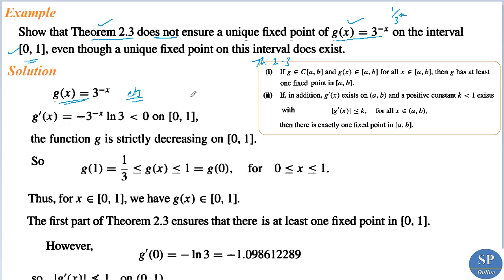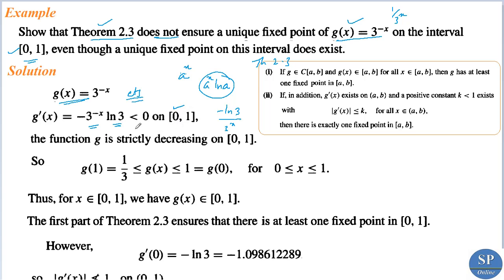We compute g'(x). Since the derivative of a^x is a^x · ln(a), applying the chain rule to 3^(-x) gives g'(x) = 3^(-x) · ln(3) · (-1) = -3^(-x) · ln(3), which equals -ln(3)/3^x. Since ln(3) and 3^x are both positive, g'(x) < 0 on [0, 1]. Therefore, g is strictly decreasing on this interval.